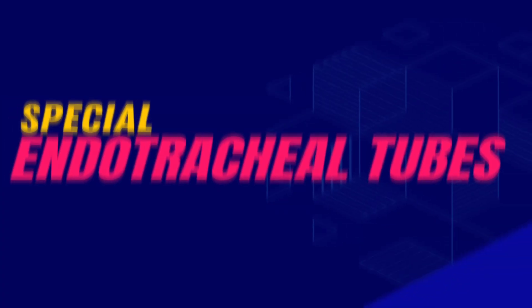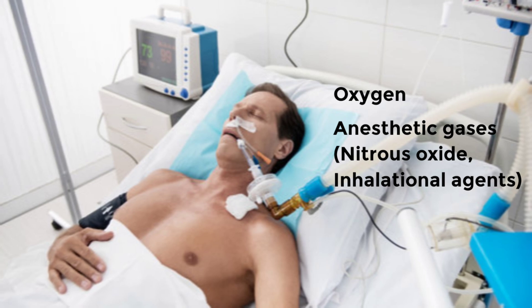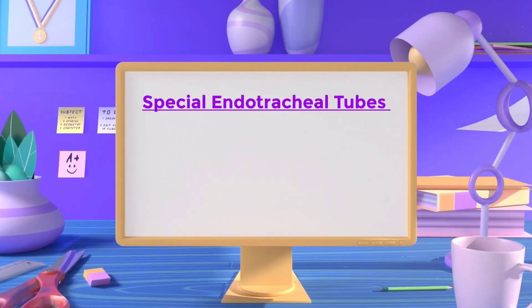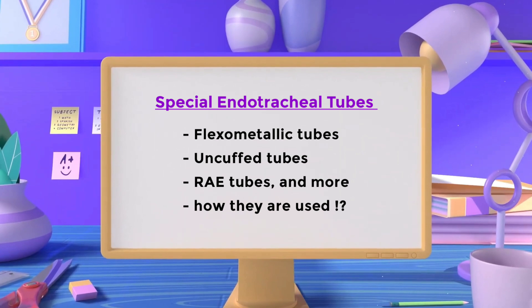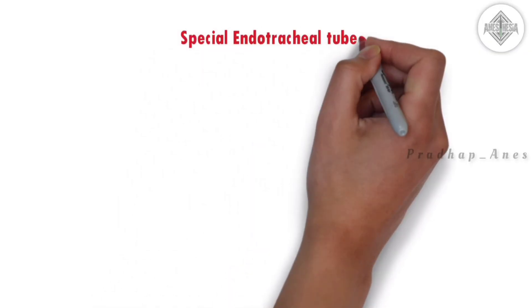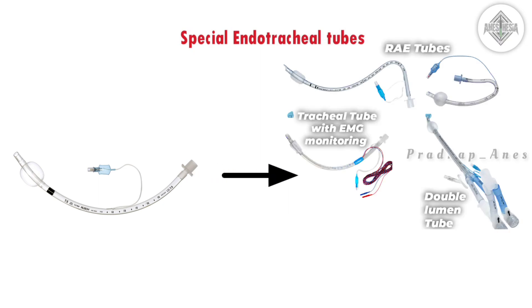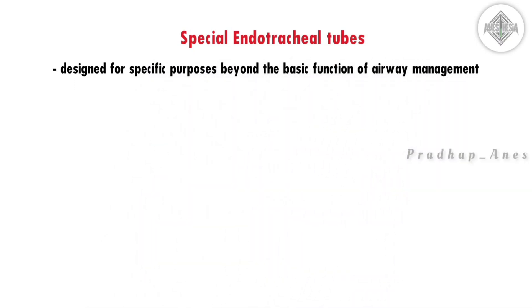Hello everyone and welcome to Pradhap's Anesthesia. In this video, we are going to focus on special endotracheal tubes, which are devices that help us deliver oxygen and anesthesia to our patients during surgery. You will learn about the different types of special endotracheal tubes, such as flexometallic tubes, uncuffed tubes, RAE tubes, and more, and how they are used for various procedures. Apart from the normal tube, there are some special types of endotracheal tubes designed for specific purposes beyond the basic function of airway management.